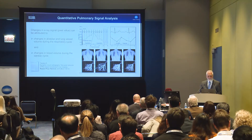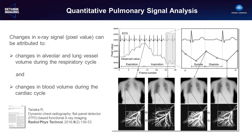We can look at the changes in pixel intensity over the respiratory and cardiac cycles. Over respiration, the lungs expand, decreasing x-ray attenuation in a region-by-region basis. And with the cardiac signal, the blood volume changes through the heartbeat.